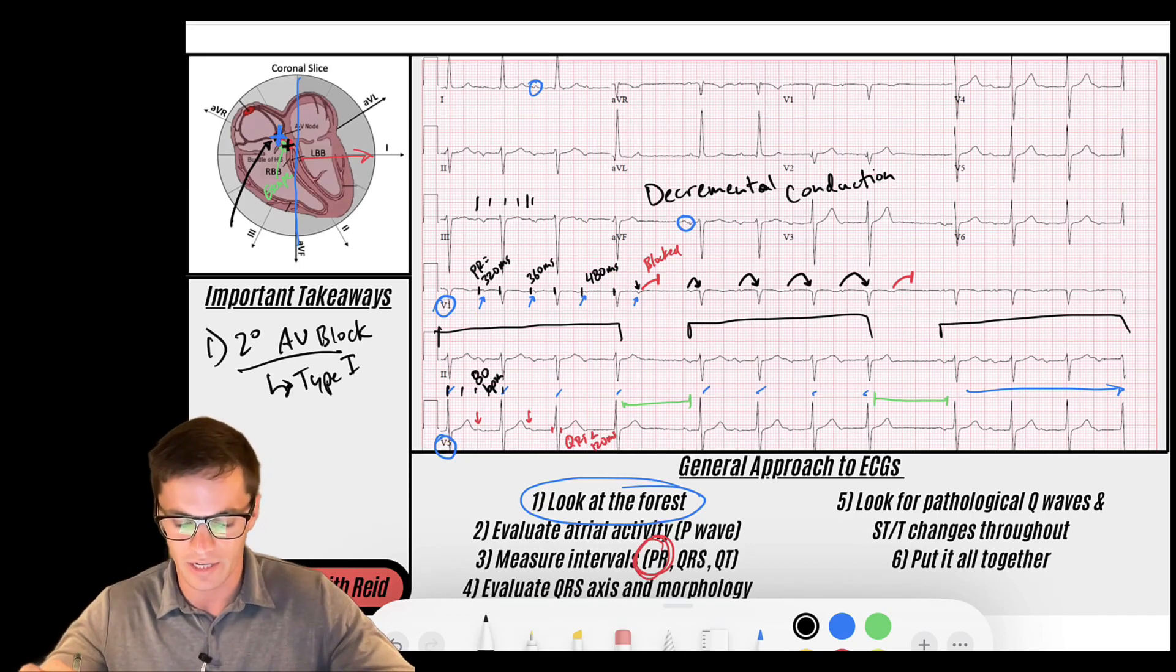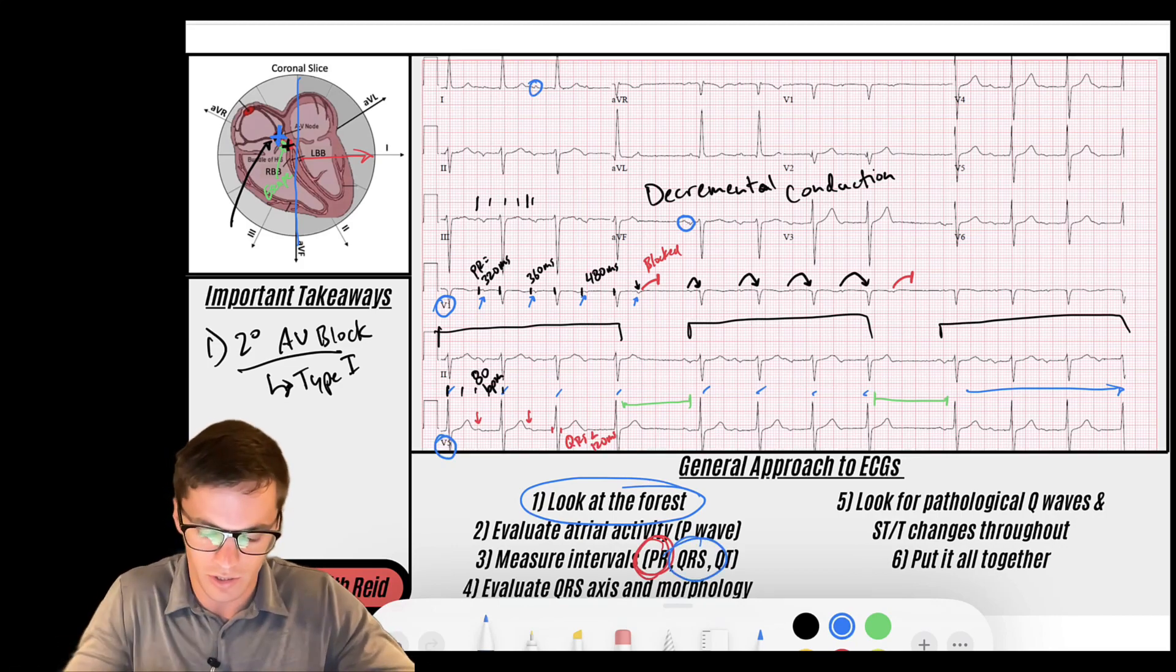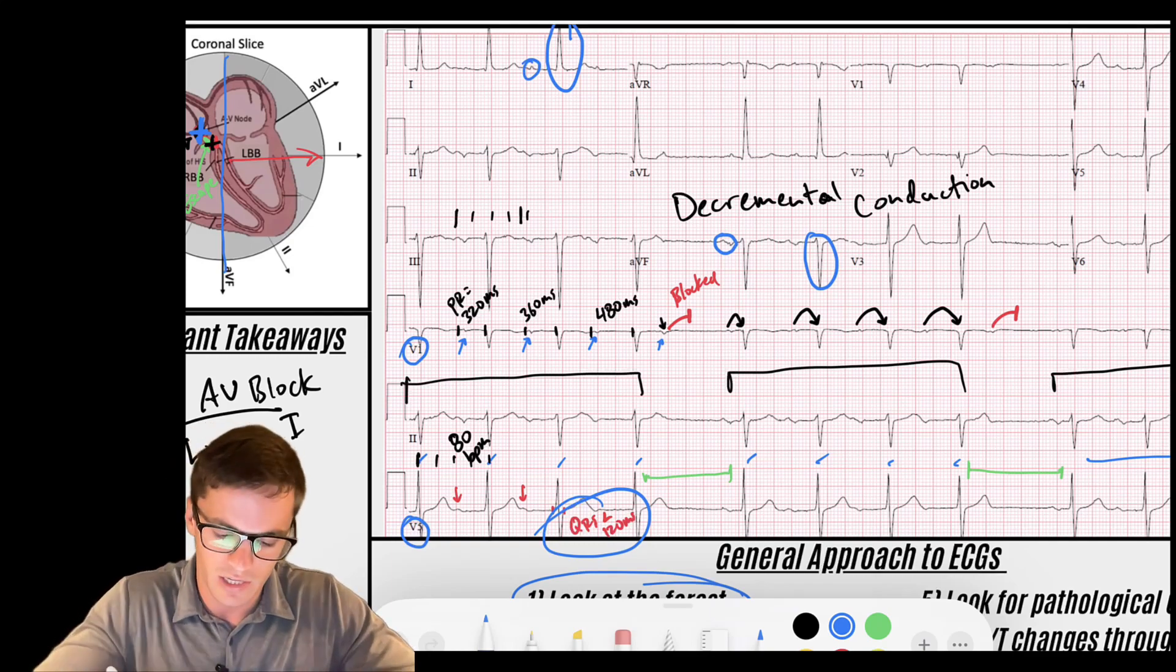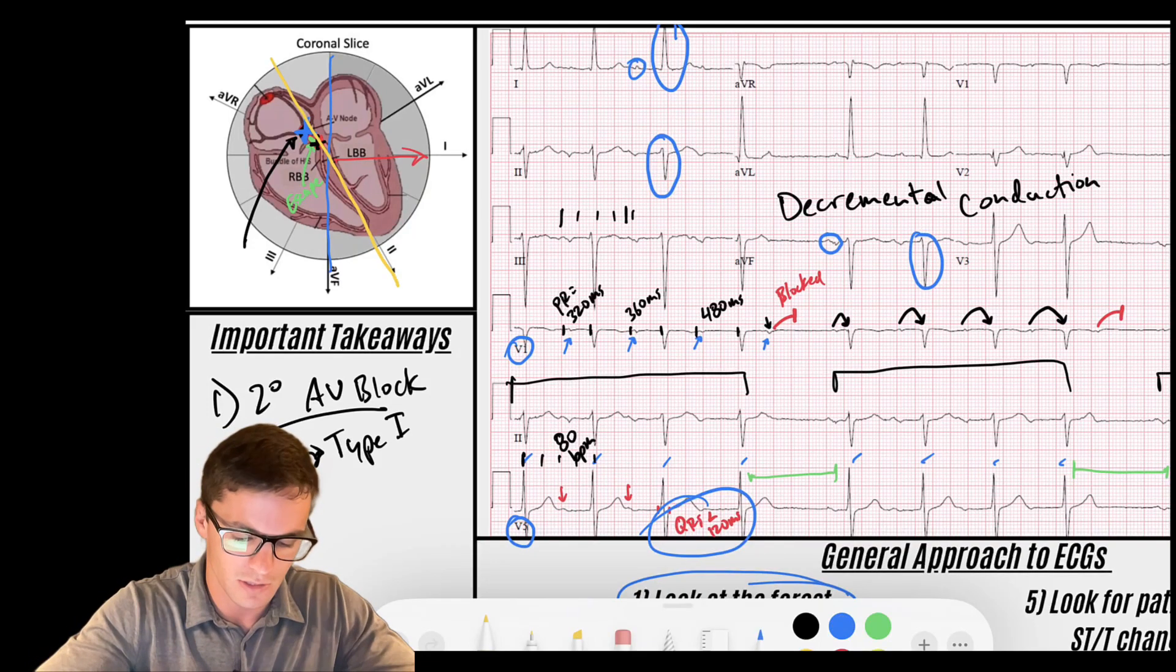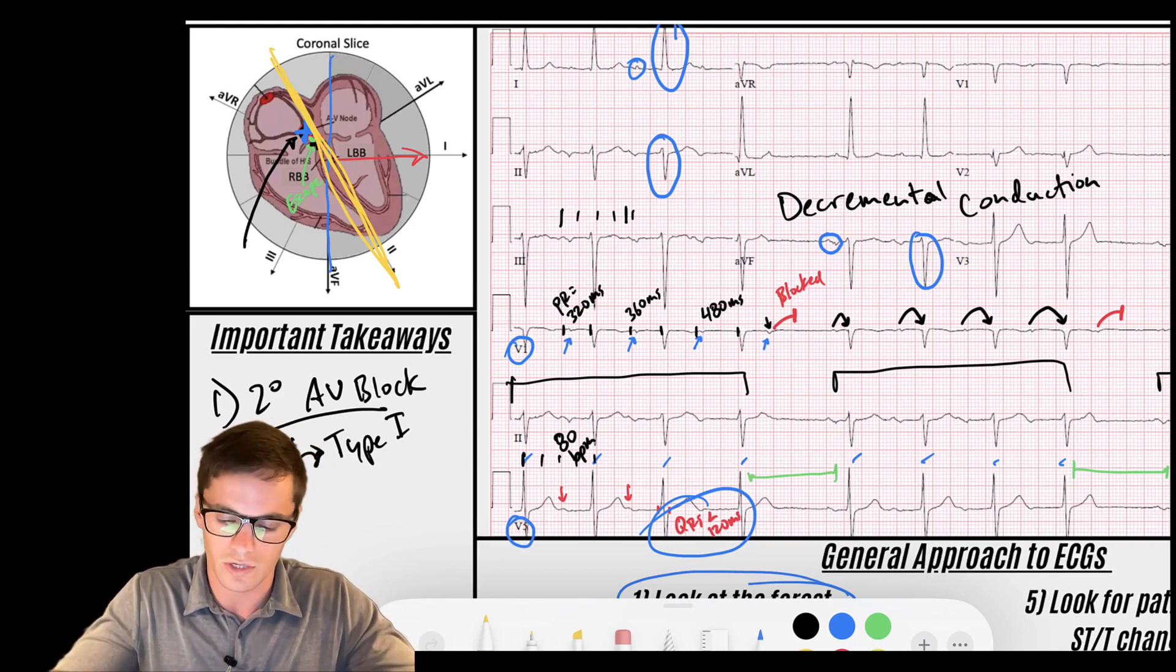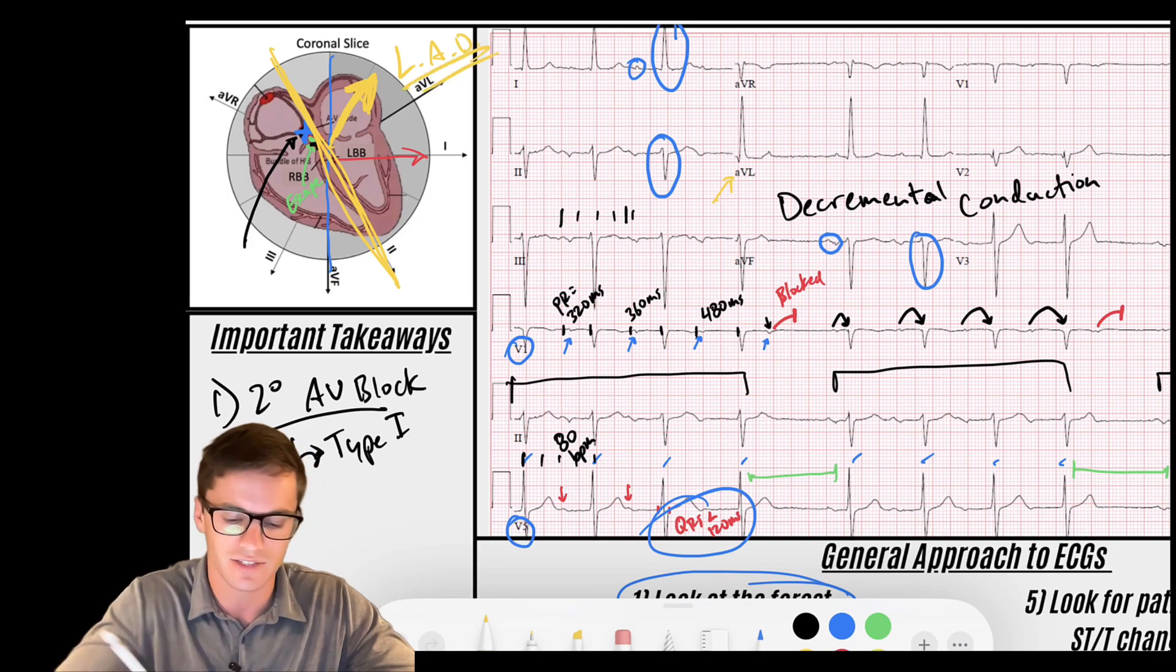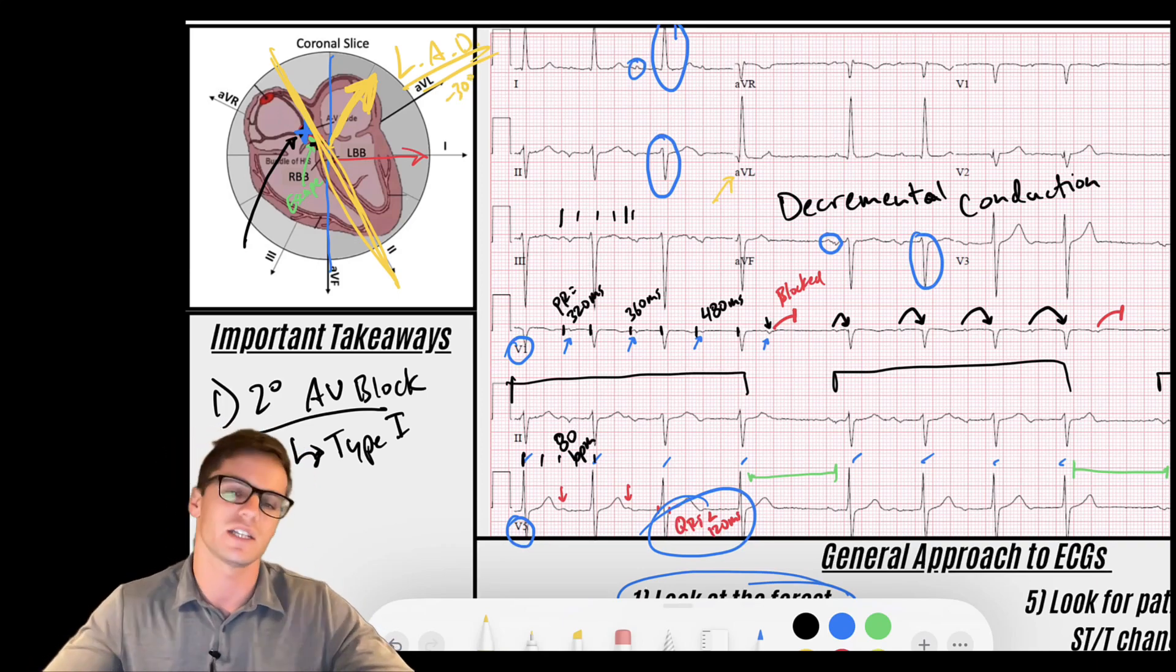So we said we've got a second degree type one AV block here as sinus rhythm. Let's take a look at our QRS morphology. We said it was narrow, less than 120 milliseconds. The axis of our QRS is upright in lead one, but down going in AVF. So it's kind of going up into the left. Let's figure out how far up into the left. It's negative in lead two. So if it's negative in lead two, here's lead two. If it's negative in lead two, that means it's going away from lead two, and it's going towards AVL. So we've got an axis that's going this direction. We would call this left axis deviation. So we have left axis deviation because it's farther than AVL, which is negative 30 degrees. We've got left axis deviation.